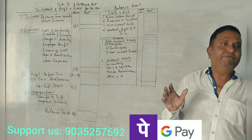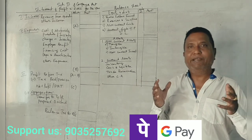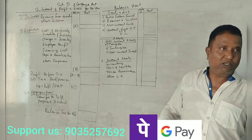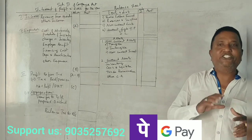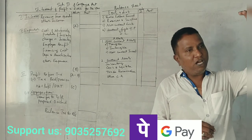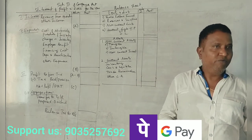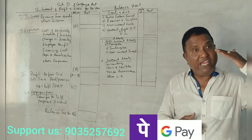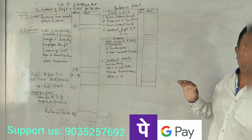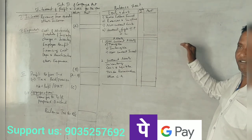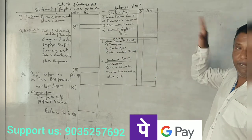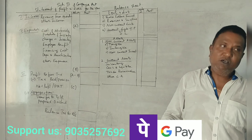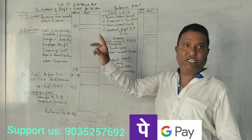The first expense item is cost of materials — that is, purchase of inventory or stock purchases. Next is changes in inventory: opening stock minus closing stock. For example, opening stock 50, closing stock 10,000 — the difference gives a positive or negative change in inventory or stock.